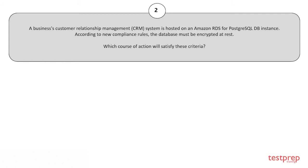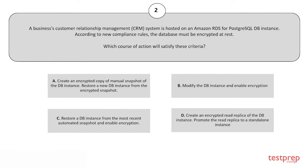Question 2: A business's customer relationship management system is hosted on an Amazon RDS for PostgreSQL DB instance. According to new compliance rules, the database must be encrypted at rest. Which course of action will satisfy these criteria? Options: A) Create an encrypted copy of a manual snapshot of the DB instance and restore a new DB instance from the encrypted snapshot. B) Modify the DB instance and enable encryption. C) Restore a DB instance from the most recent automated snapshot and enable encryption. D) Create an encrypted read replica of the DB instance and promote the read replica to a standalone instance. The correct answer is option C.